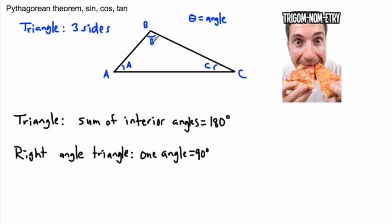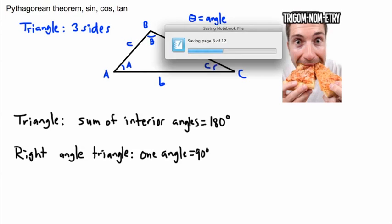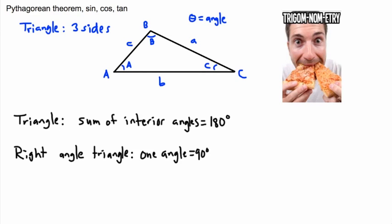It really helps to see how we also name the sides. If this is capital A — the angle — then the side opposite to it, the one straight across, is called lowercase a. The side opposite to capital B is called lowercase b, and the one opposite to C is lowercase c. This is a common convention you'll see a lot in mathematics.